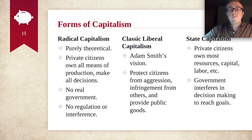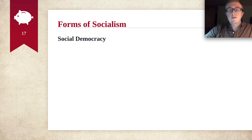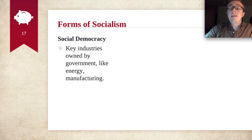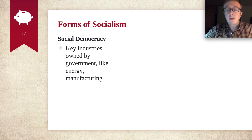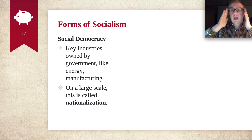So going back, let's talk about some forms of socialism. Social democracy — this is the one right after state capitalism. So if we're going from the blue into the pink, this is the next step. In this one, the key industries of the nation, like energy and manufacturing — what you might consider the most important, the essential things — are actually owned, operated, and run by the government. When you do this on a really large scale, what you're doing is you're nationalizing something.